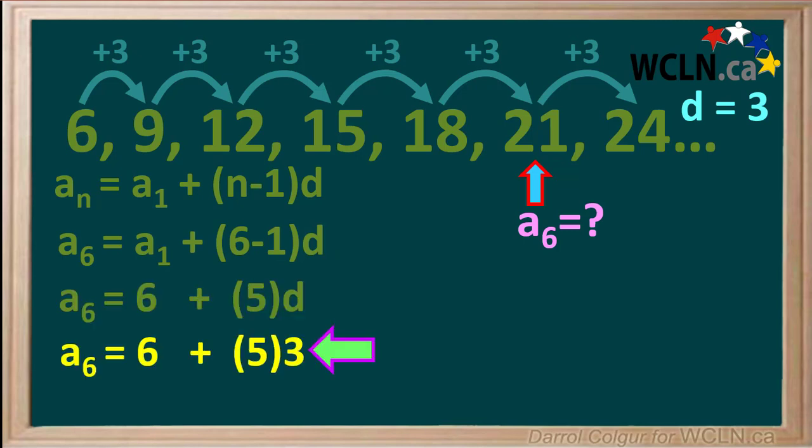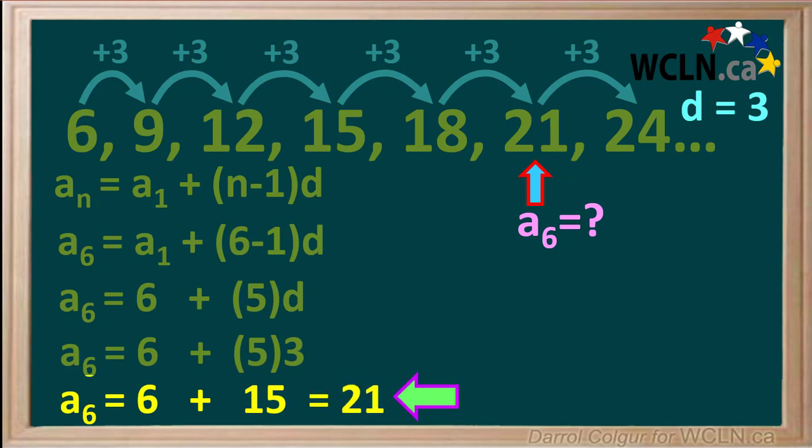Because d equals 3, this becomes 6 plus 5 times 3, which is 6 plus 15, or 21.